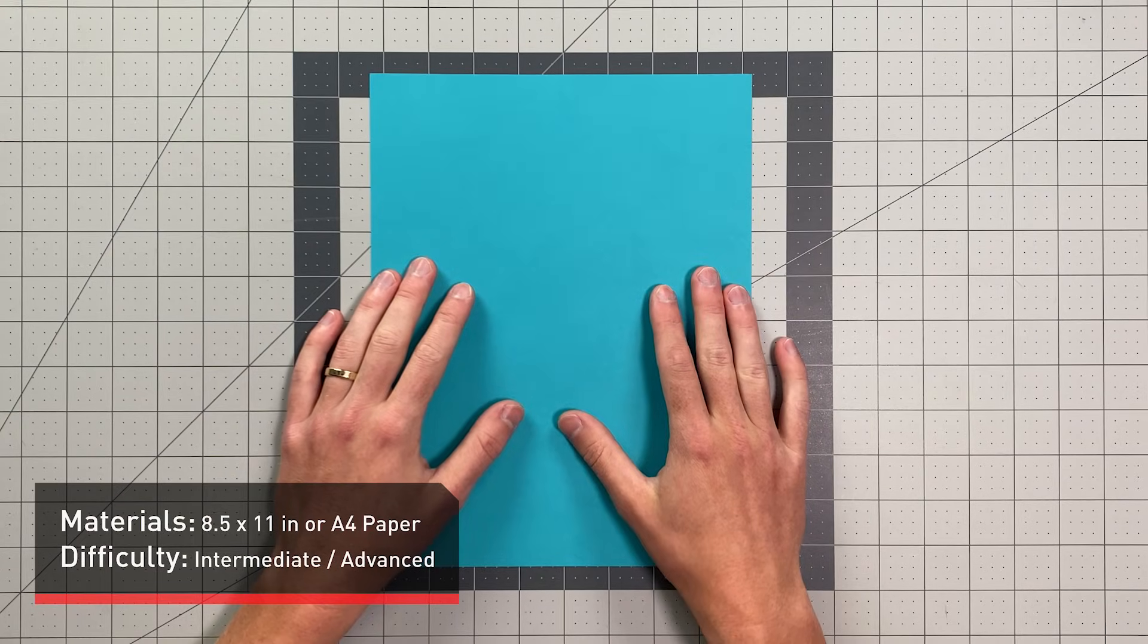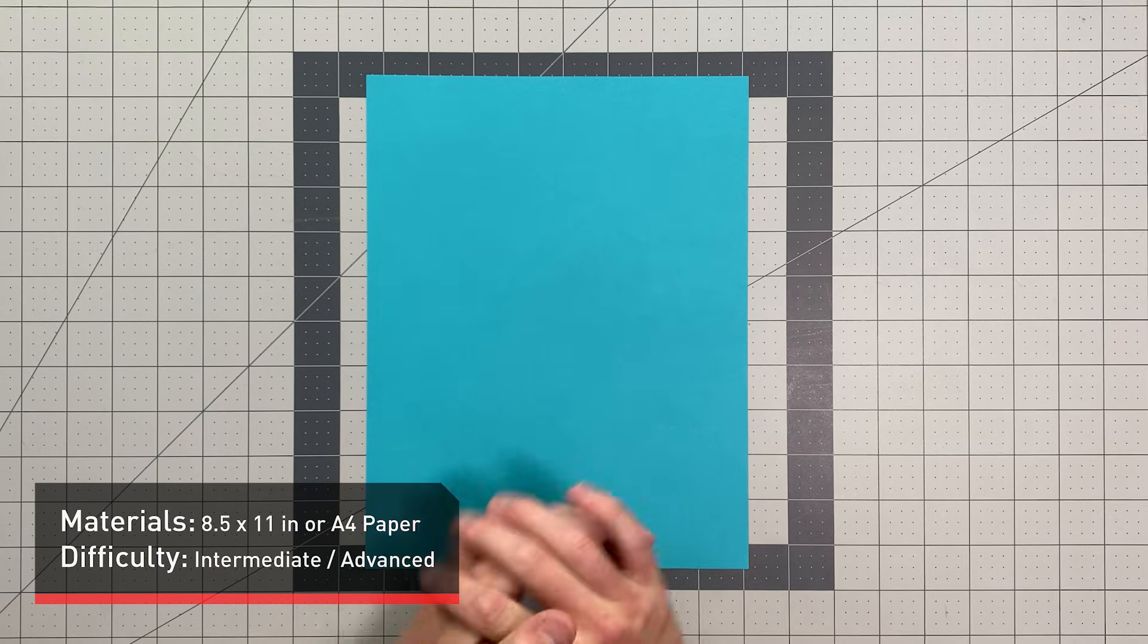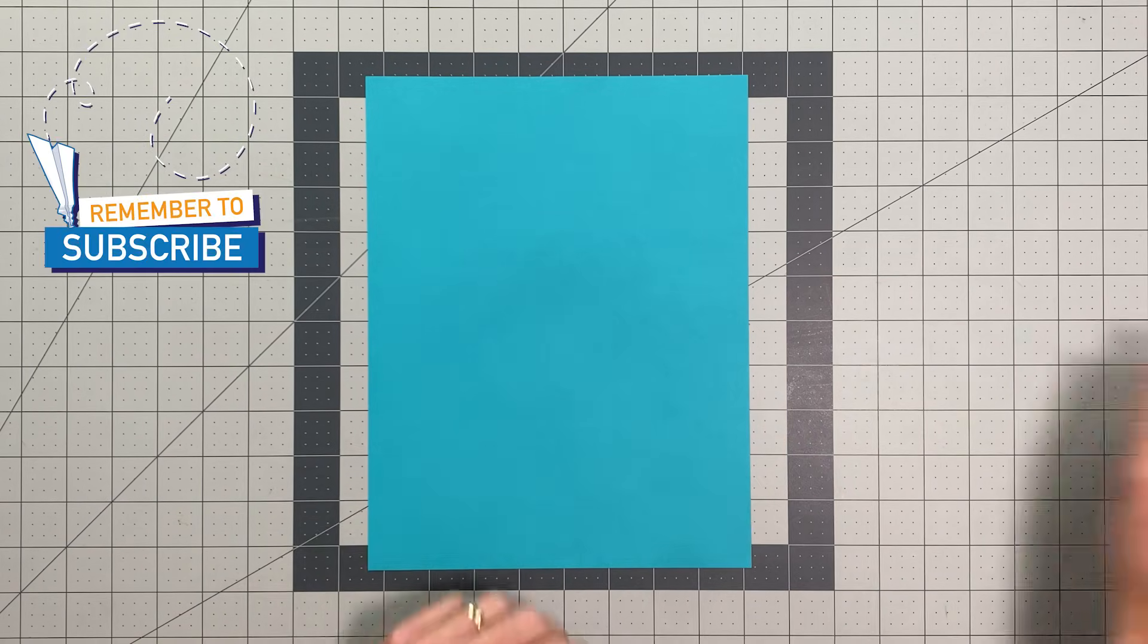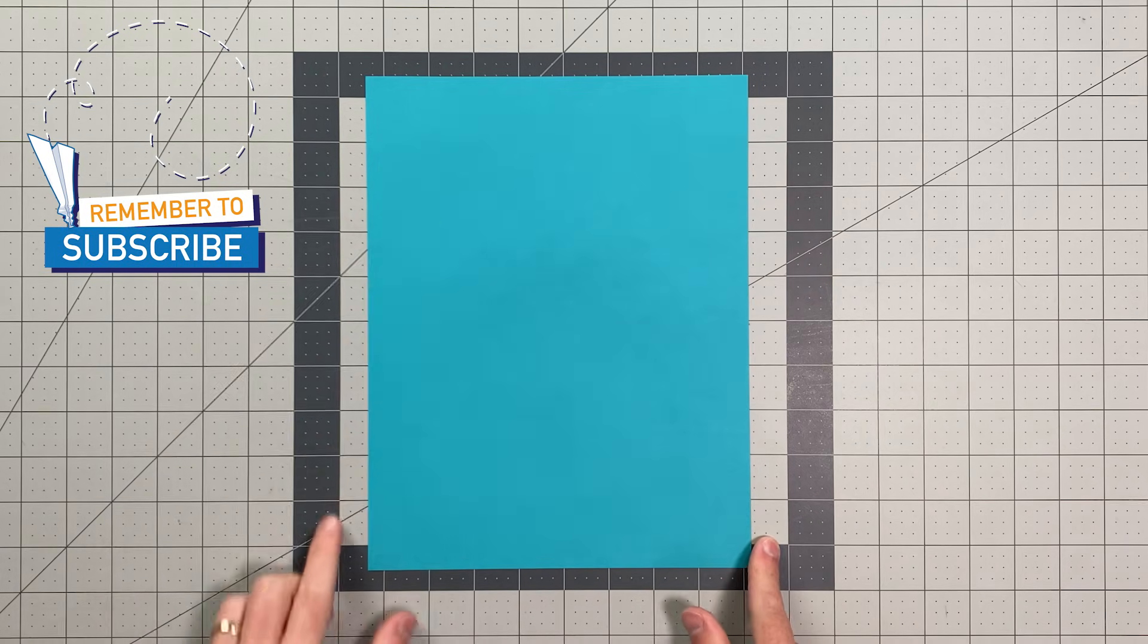All you will need in order to fold this paper airplane is a sheet of 8.5 by 11 inch or A4 paper, and you will probably want a pen or pencil as well. And with that, we're going to begin by folding this edge to this edge.